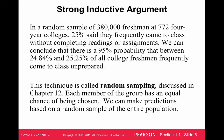A strong inductive argument — this is kind of a statistics argument we'll see near the end of the course. It says a random sample of 380,000 freshmen at 772 four-year colleges found that 25% said they frequently came to class without completing readings or assignments. Therefore, there is a 95% probability that between 24.84% and 25.25% of all college freshmen frequently come to class unprepared.